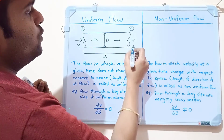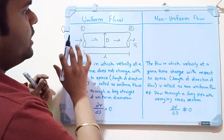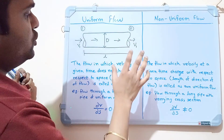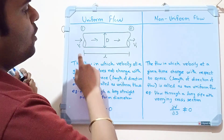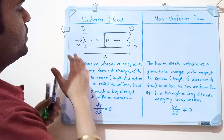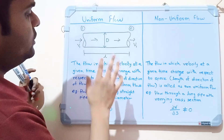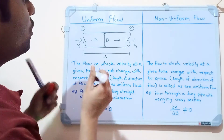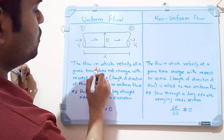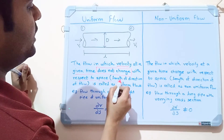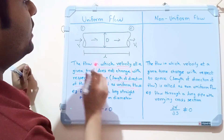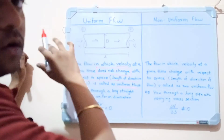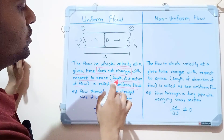Since this pipe has the same diameter throughout, the velocity at the outlet at point 2 will also be v1. So velocity at a given time does not change with respect to space, that is displacement. Velocity remains the same throughout the pipe. This is called uniform flow.